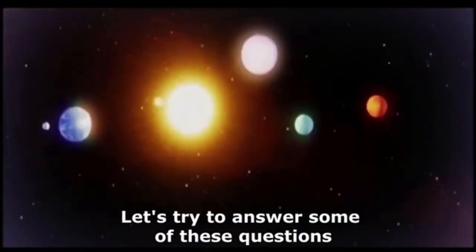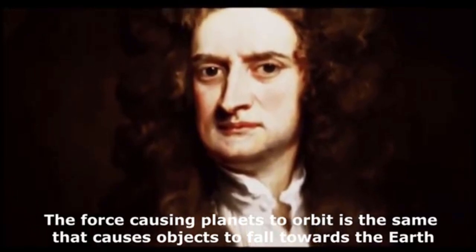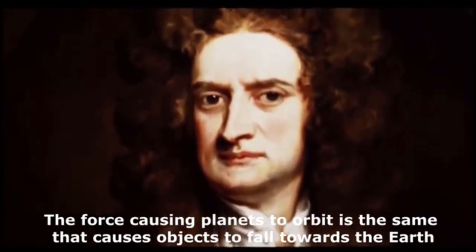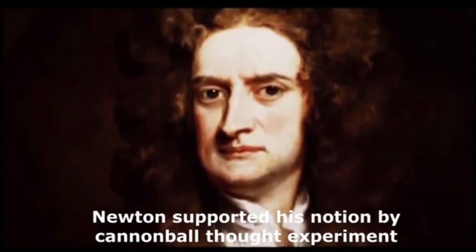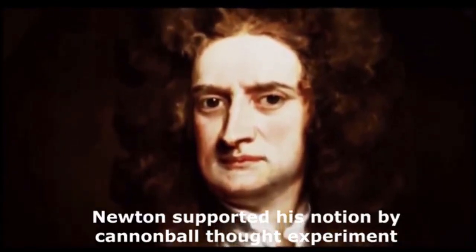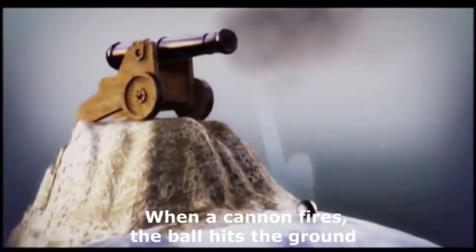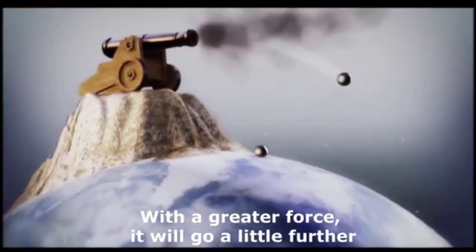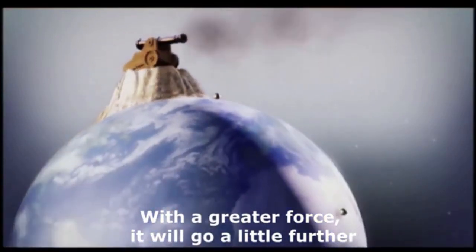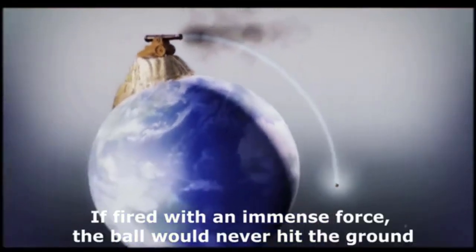Let's try to answer some of these questions. The force causing planets to orbit is the same that causes objects to fall towards the earth. Newton supported his notion by cannonball thought experiments. When a cannonball fires, the ball hits the ground. With greater force, it will go a little further. If fired with an immense force, the ball would never hit the ground.